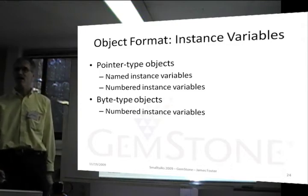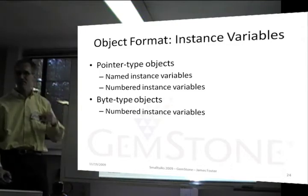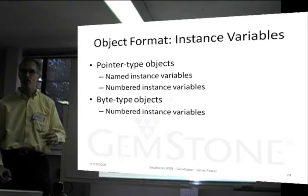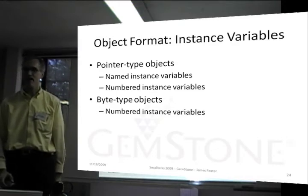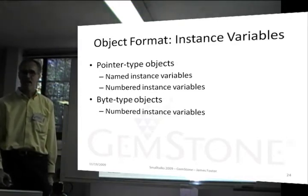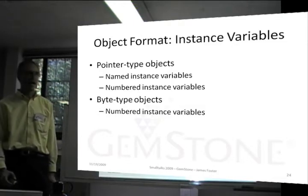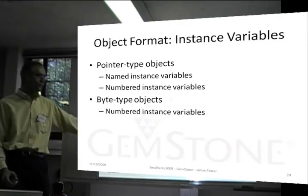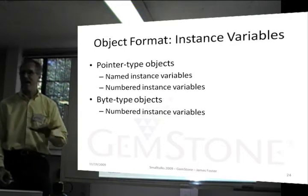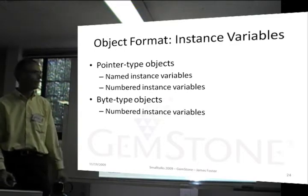Instance variables: a pointer type object has pointer instance variables, both named and numbered. A byte type object has only numbered instance variables, and in a byte one, there are only 8 bits that you can put in each instance variable.